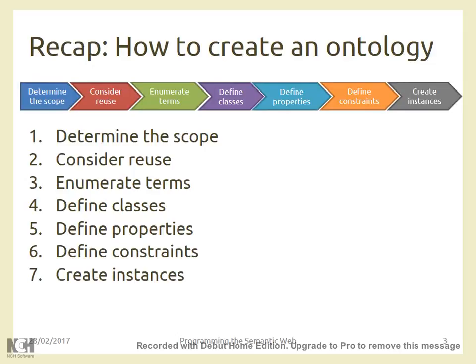To recap how to create an ontology: first, determine the scope; second, consider reuse of existing ontologies; third, enumerate terms — keywords, nouns, whatever; then define your classes, object properties, data properties, and constraints on those classes and properties; and finally, optionally create instances for the ontology.